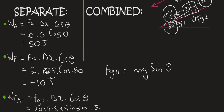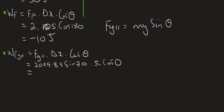So now we know that Fg parallel is trying to make the object move down the slope and the object is moving down the slope. So that's going to be cos of 0. You can then type all of this in on your calculator and that gives you 490 joules.